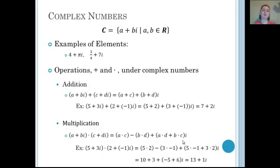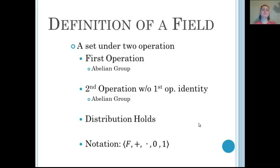Because we are in abstract algebra — we've been discussing rings, fields, and groups — I am going to claim and prove that the complex numbers are a field. As a refresher, a field is a set under two operations. The first operation is an abelian group (in our case, addition), and the second operation (multiplication) must also be an abelian group but without the first operation's identity, which is 0 plus 0i, as it causes problems with inverses. We also have to show that distribution holds.